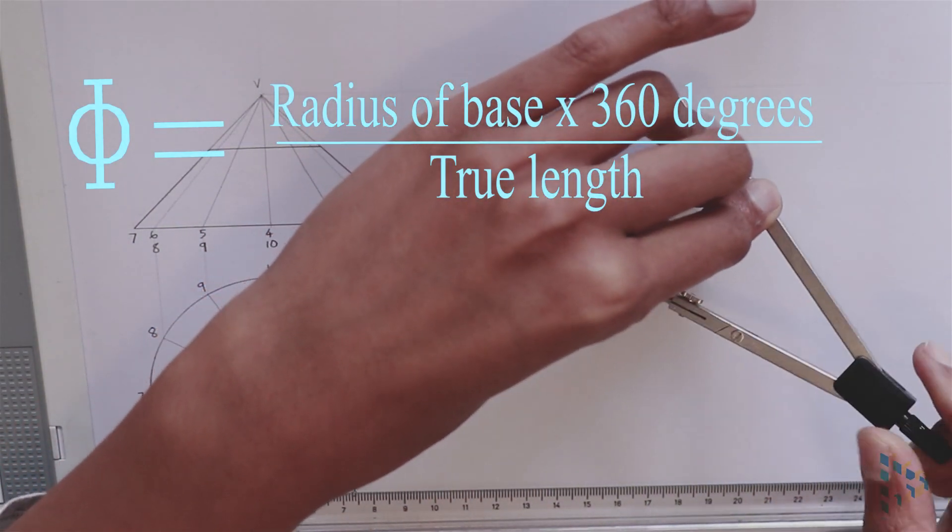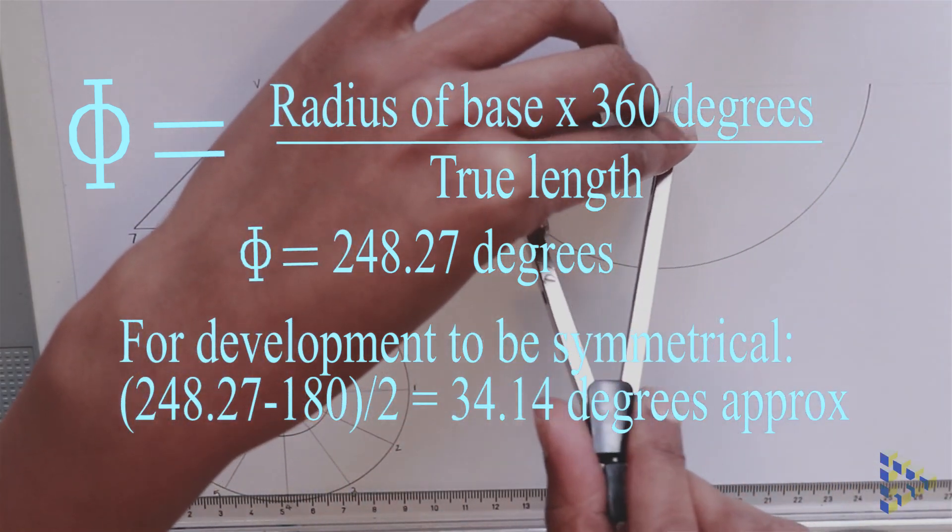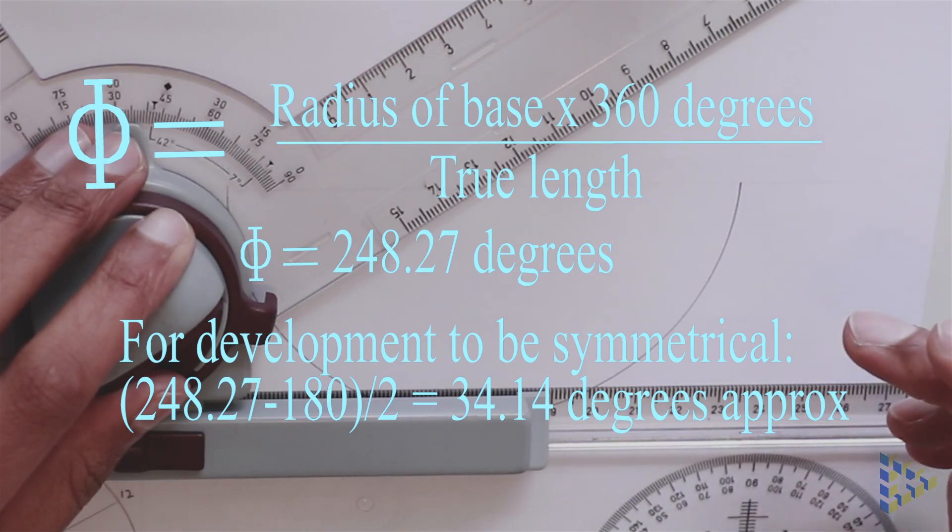Using the equation on the screen, we can calculate the angular length of the radial line development. In this case, it's 248 degrees.